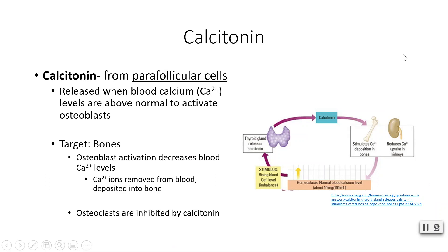The other hormone from the thyroid gland is calcitonin, secreted specifically from the parafollicular cells. When blood calcium levels rise above normal, calcitonin is released to bring them back down. Calcitonin activates osteoblasts, whose job is to take calcium from the blood and deposit it into the bones, thereby building bone. Once calcium is removed from the blood, blood calcium levels return to normal and the feedback loop closes.